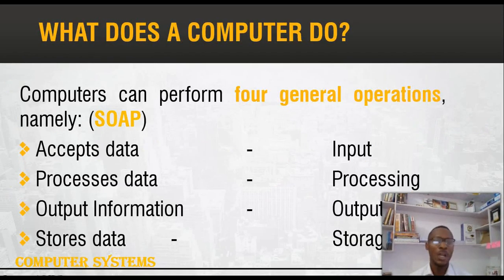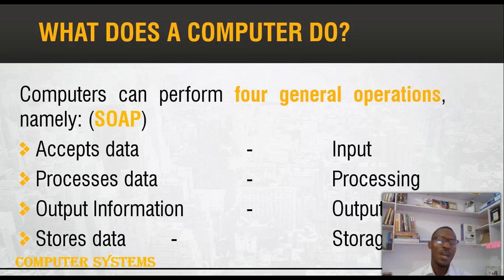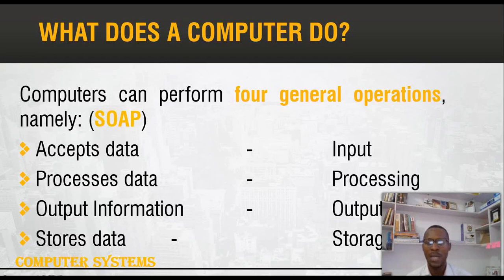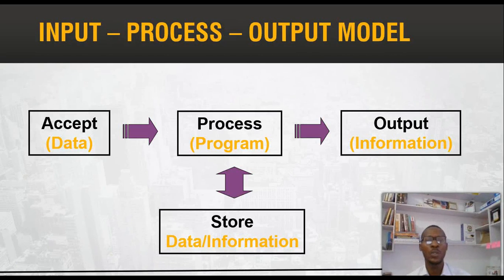From our definition of what a computer is, we can bring out four basic functions of a computer system, which we can recall using the acronym SOAP. A computer can accept data — that is, it takes user input. A computer system can process data. Those data can be processed to give us the desired information — that is, the computer can output information. And data and information on our system can be stored for future references — so a computer also has the ability to store data. So: accept, process, output, and store.